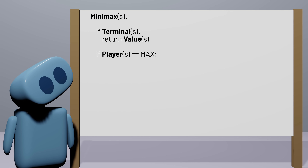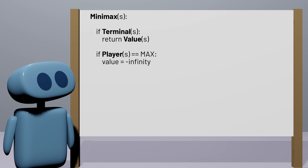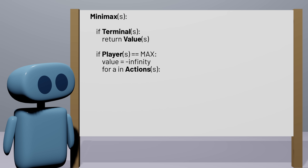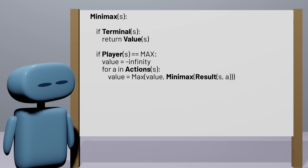Then we loop through all of the actions. For each action we can take, we figure out what the resulting game state is and calculate the minimax value of that new game state. If it's greater than the best value we've found so far, it becomes the new value. The result of this loop is that the value variable will equal the largest value we can get considering all possible actions — so that's the value we return.